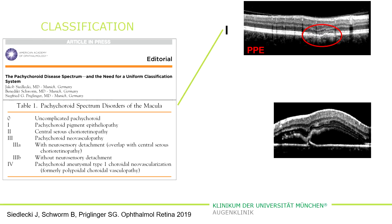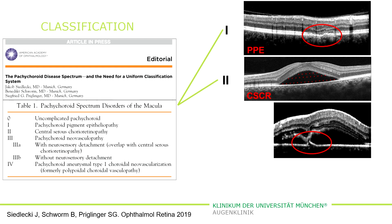And if the disease advances, if the RPE damage increases more and more, we even get rips and then subretinal fluid occurs. And then we have the second stage, which is central serous choroidopathy.